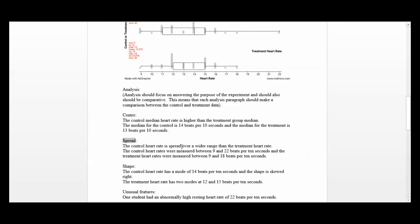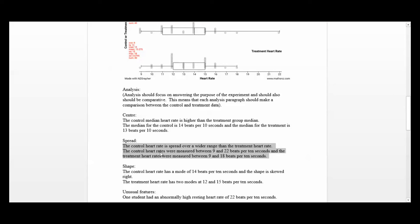Talking about spread: the control heart rate is spread over a wider range than the treatment heart rate — mostly because of this outlier value. The control heart rate range is spread out more than the treatment heart rate range. The control heart rates were measured between 9 and 22 beats per 10 seconds. That's an achieved level observation for spread.